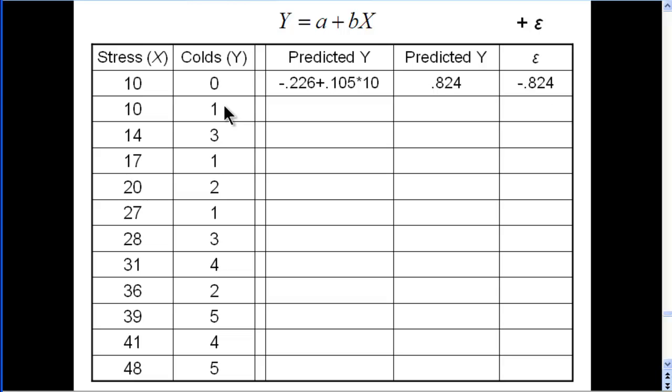Now let's check another example, or two examples. In this case, where the person had stress of 28, we build the regression equation the same way we did in the first case. We use the intercept, our foundation, plus the slope, multiplied by X for that case, which is 28.